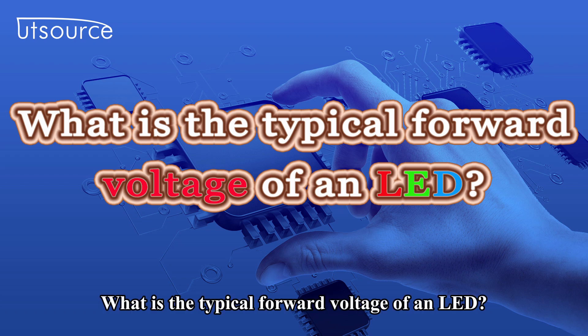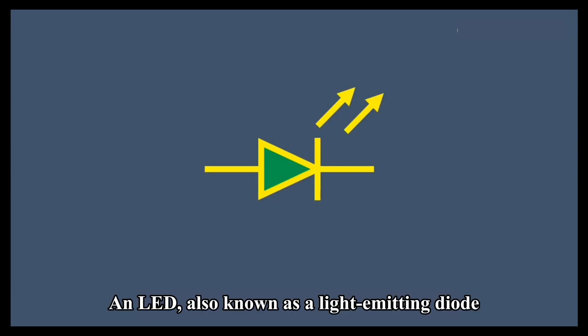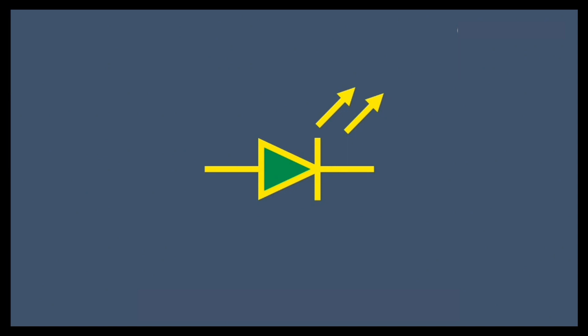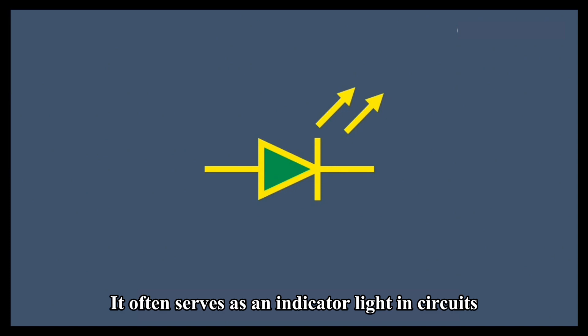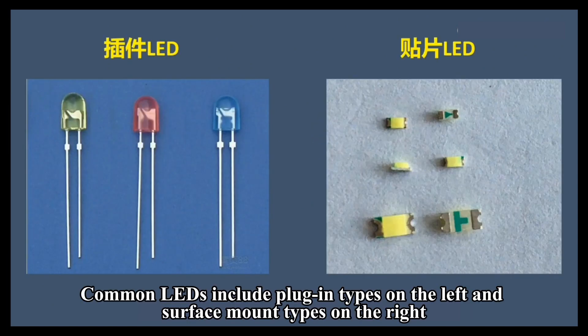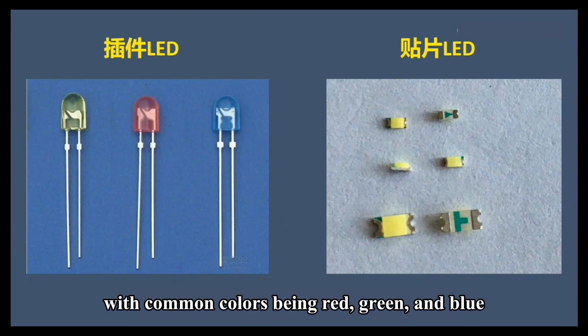What is the typical forward voltage of an LED? An LED, also known as a light-emitting diode, is often used in electrical design and its electrical symbol is shown in the video. It often serves as an indicator light in circuits. Common LEDs include plug-in types on the left and surface mount types on the right, with common colors being red, green, and blue.